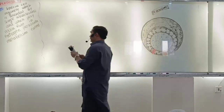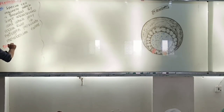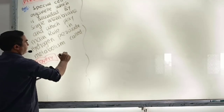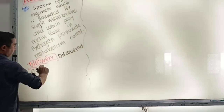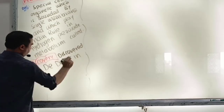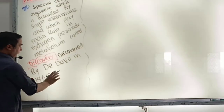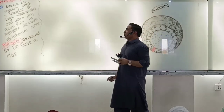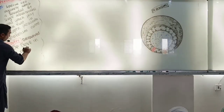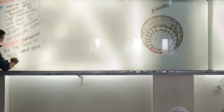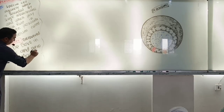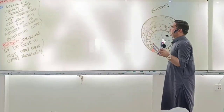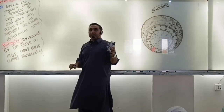The peroxisome was discovered — discovered in 1965. They were originally called micro-bodies. The micro-bodies were later renamed peroxisomes.